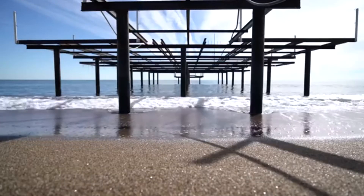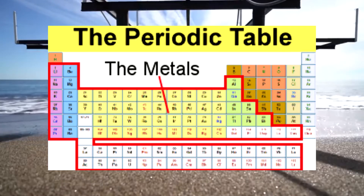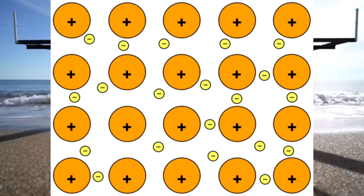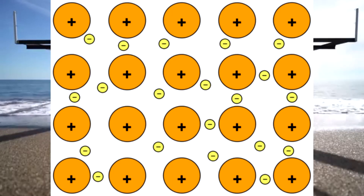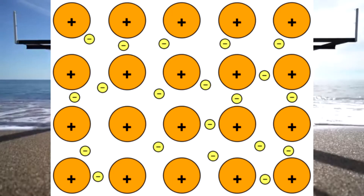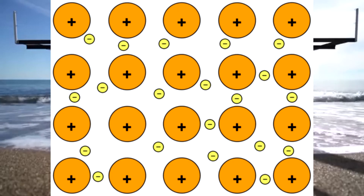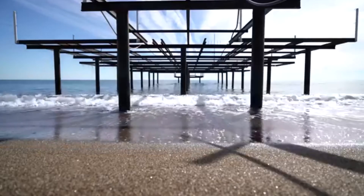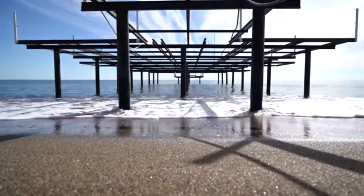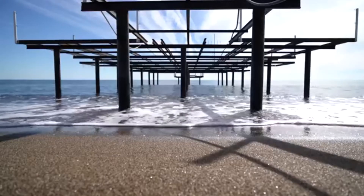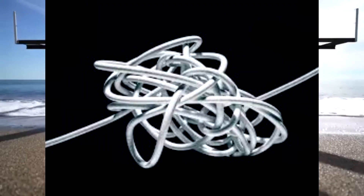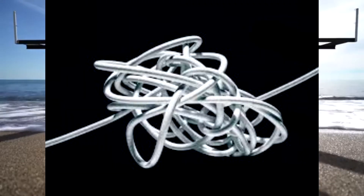Metallic bonding is the bonds between metals. A key aspect of metallic bonding is the sea of electrons. Because the electrons are delocalized in metals, they move freely among empty atomic orbitals. This sea of electrons is why metals have many of their properties, including the ability to conduct electricity, malleability, ductility, as well as other properties.